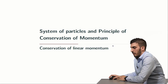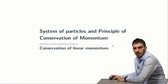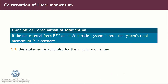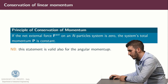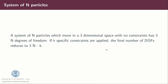We can now talk about the conservation of linear momentum. The principle of conservation of momentum states that if the net external force of an N particle system is zero, the system's total momentum P is constant. So if there are no external forces, the linear momentum is constant. This statement is also valid for angular momentum.